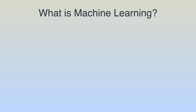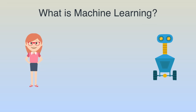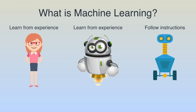Hi and welcome to the Machine Learning Pico Degree from Udacity. What we're going to talk about today is: what is machine learning? In the world we have humans and computers. One of the main differences is that humans learn from past experience whereas computers need to be told what to do — they need to be programmed. The question is: can we get computers to learn from experience too? And the answer is yes, and that's precisely what machine learning is.